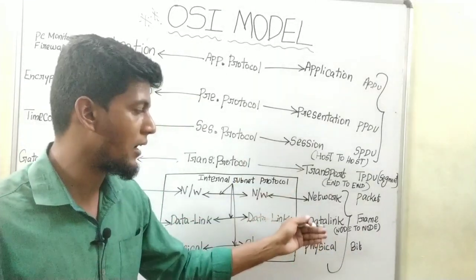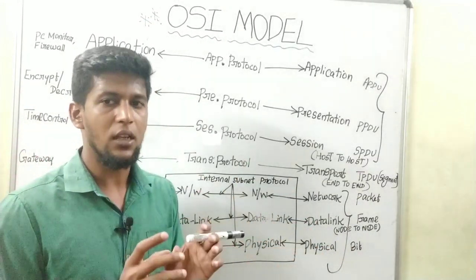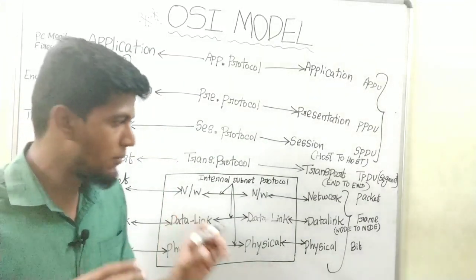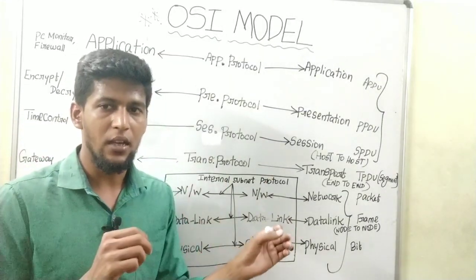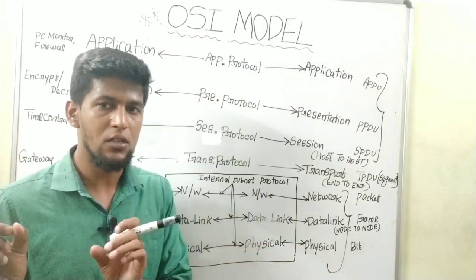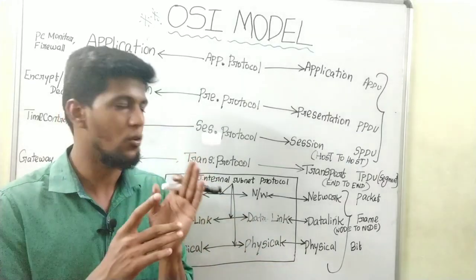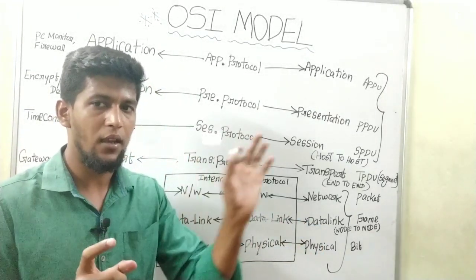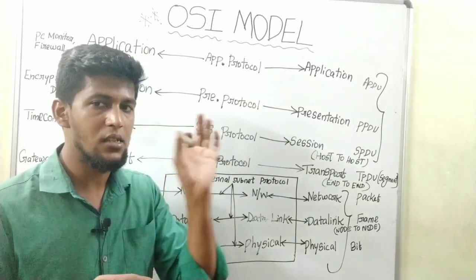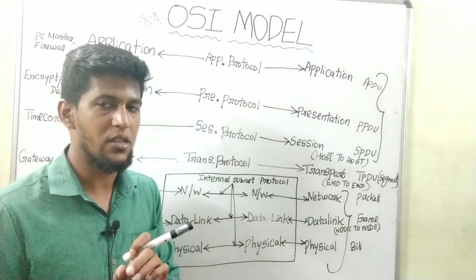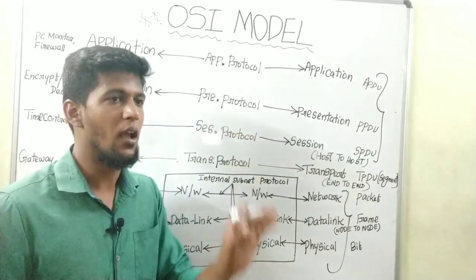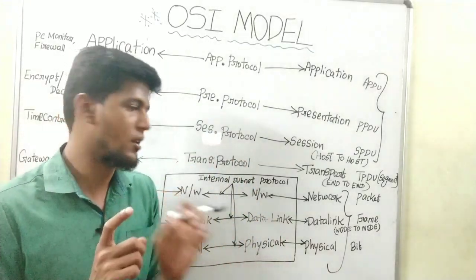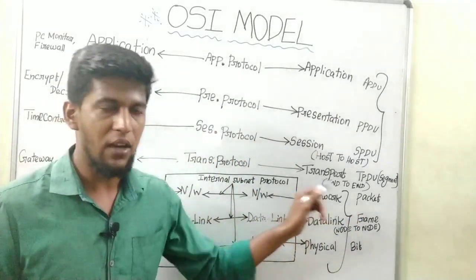The data link layer uses frames. In the frames, there is a sender address or receiver address. There are bits. In the frames, there is node to node — the sender address and receiver address is the information. This is the three nodes — if you have node to node, the data link layer uses frames.